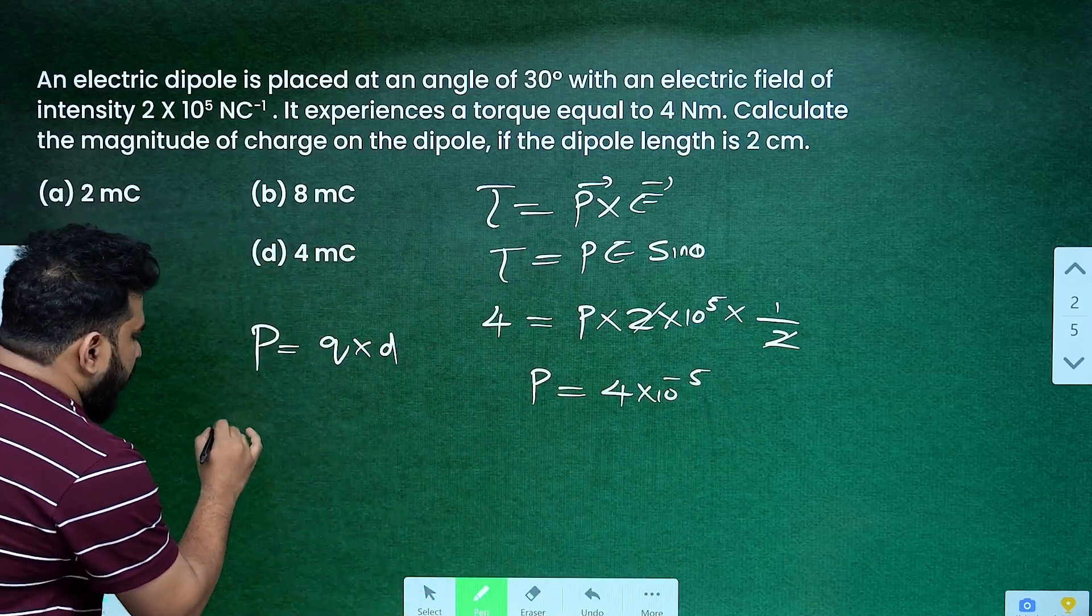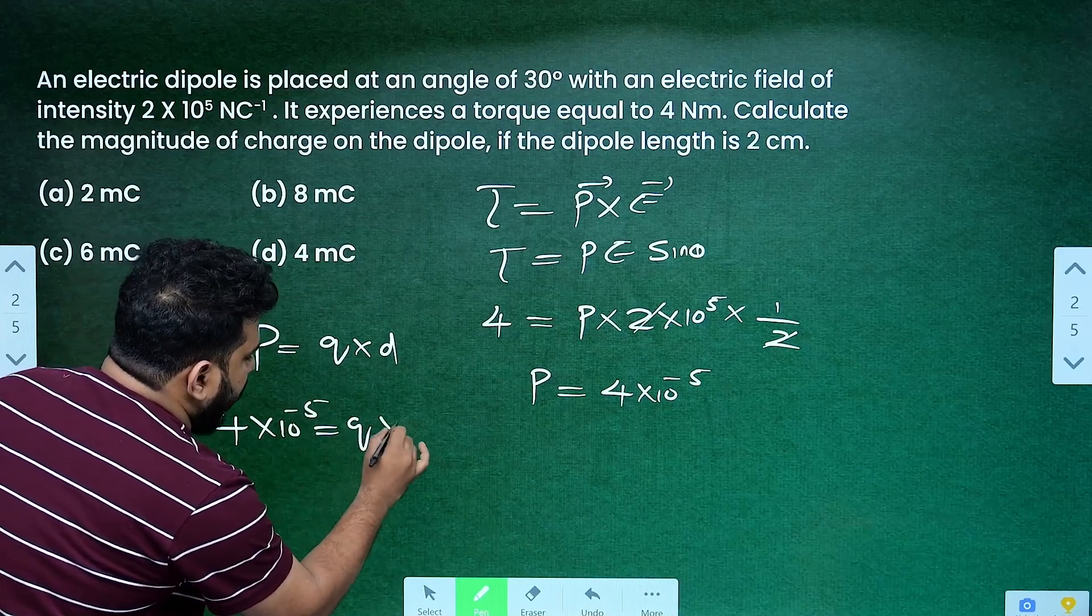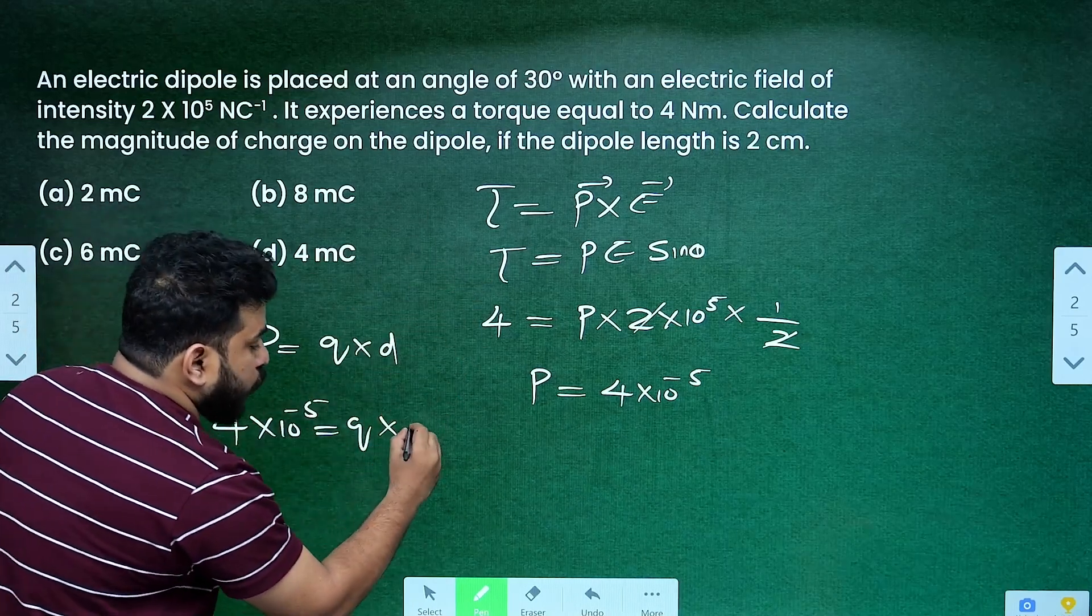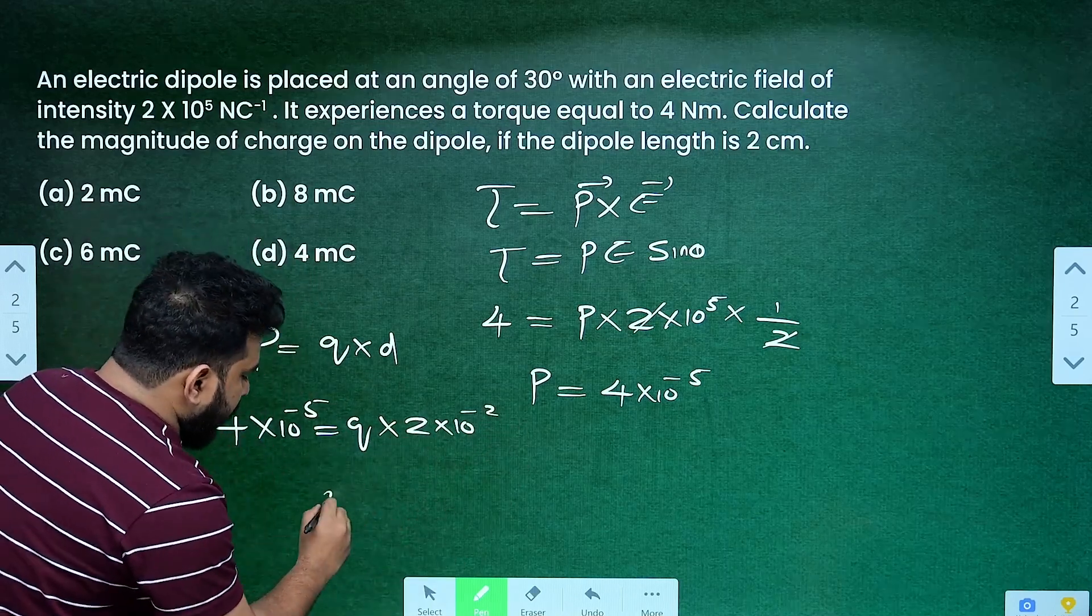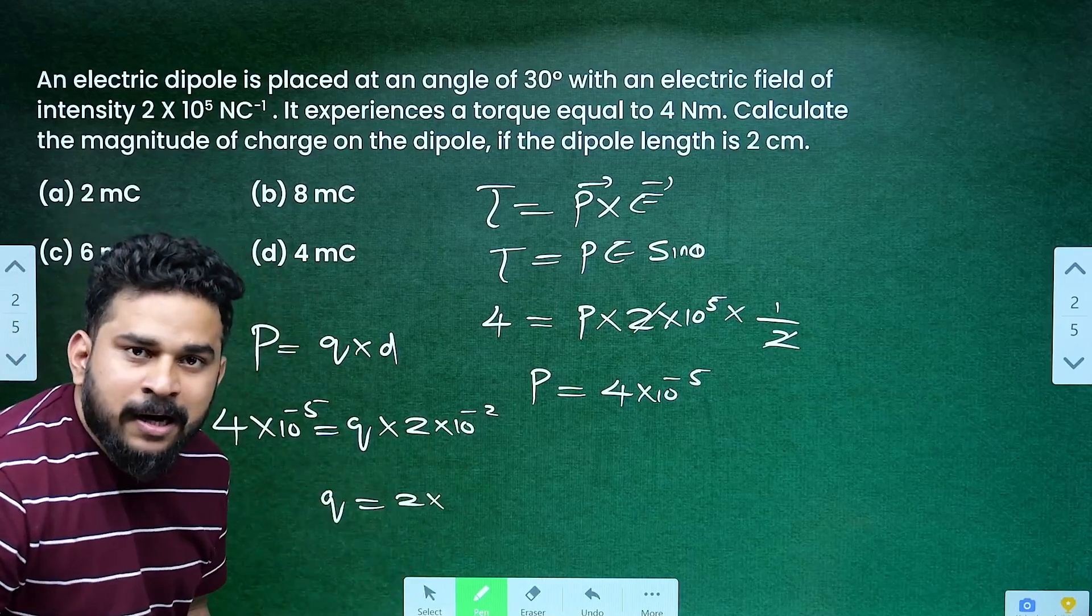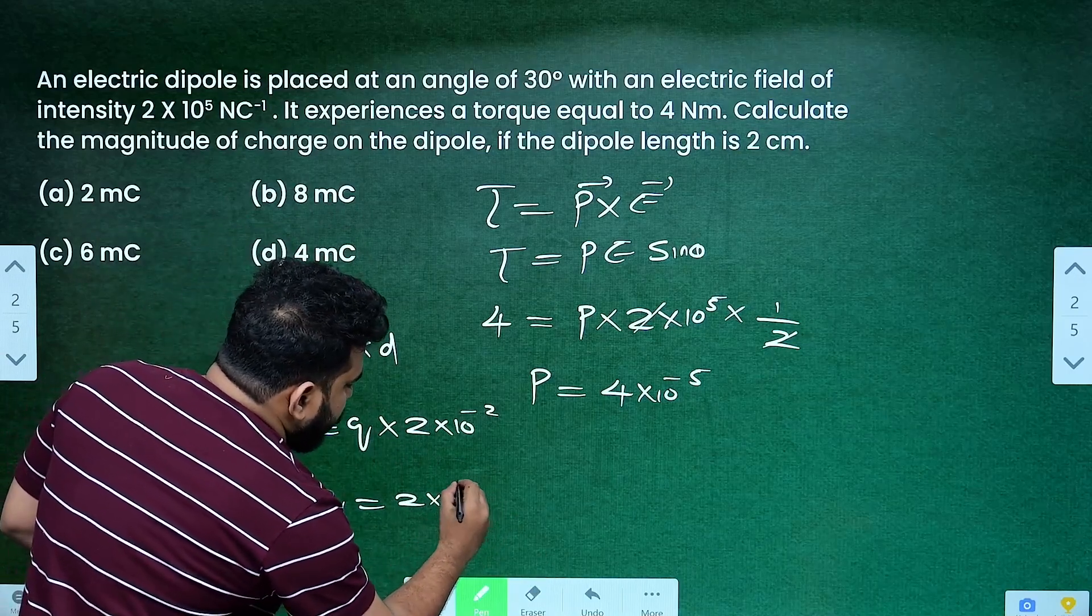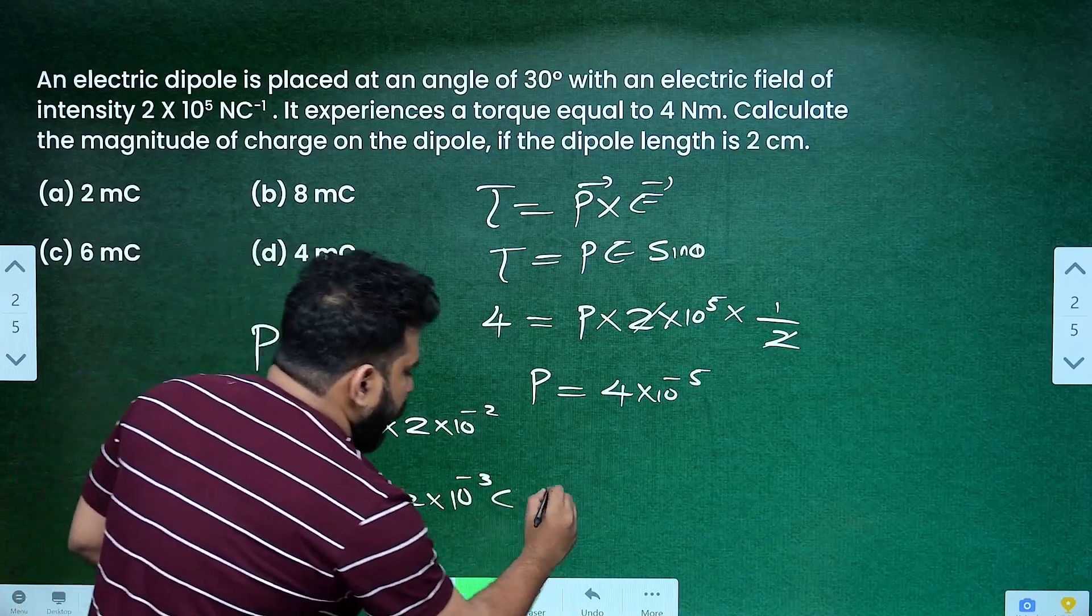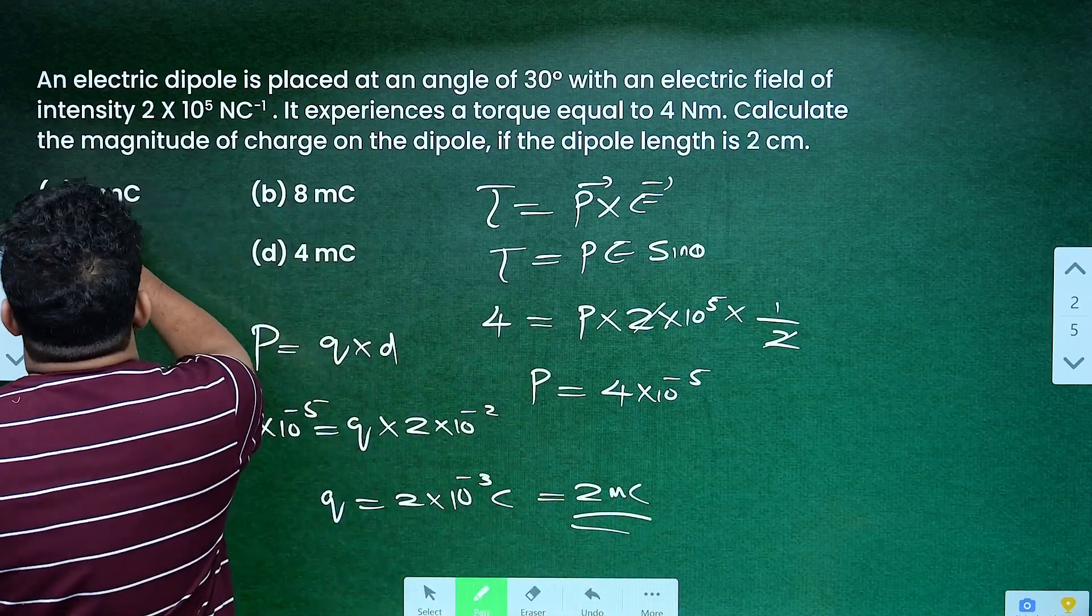Then, 4 into 10 raised to minus 5 equals charge times dipole length. Dipole length is 2 centimeters, or 2 into 10 raised to minus 2. Q is equal to 2 into 10 raised to minus 3 coulomb, or we can write 2 millicoulomb. The answer will be option A.